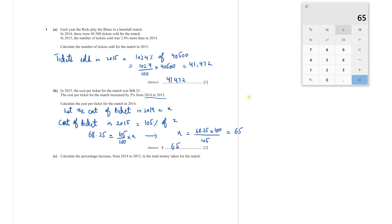You can use the ratio method as well. In 2014 to 2015, there was a 5% increase, so if in 2014 the price was 100, in 2015 it would be 105. In 2014 the actual cost is X, and the price is 68.25 in 2015. Cross-multiplying gives 105X equals 68.25 multiplied by 100 — basically the same equation as before — giving the same answer.